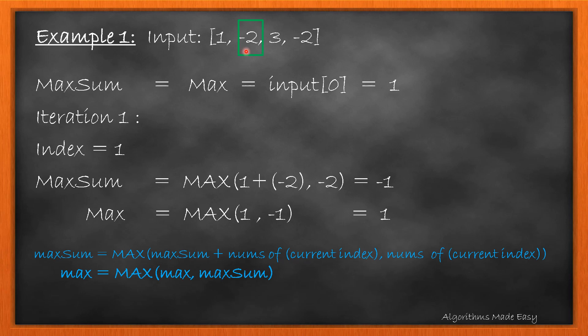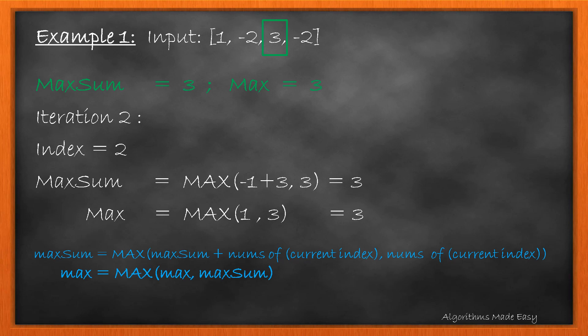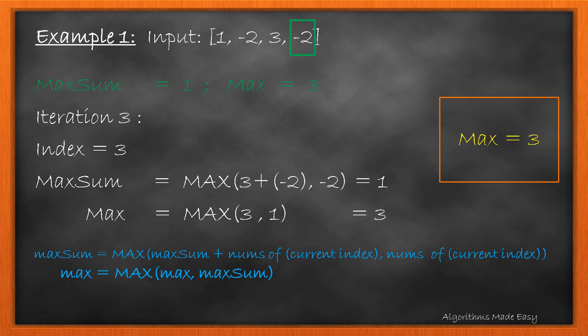We will update the maxSum with maximum of current maxSum and the element. In this case, as sum of 1 and minus 2 is greater than minus 2 itself, we update maxSum to minus 1. We will update max also with the maximum of current maxSum and the max. Similarly, we will do it for all the elements. As we have reached the end, we will return max which is 3.